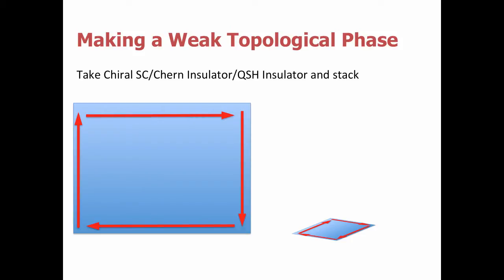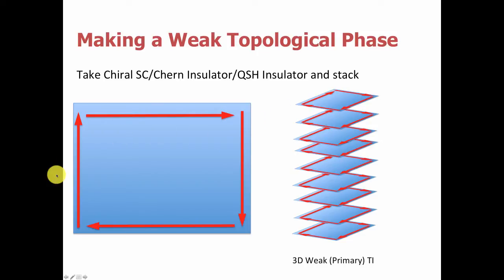We can play this game with any type of strong topological phase — examples we've studied include the chiral superconductor, the Chern insulator, and the quantum spin-Hall insulator. We can take a plane of these and stack them up. Here I've chosen a single plane of a Chern insulator and stacked it into three dimensions, creating a 3D primary topological insulator. This system will have edge states on the left and right edges, but not on the very top and bottom, again showing the anisotropy. This system is described by a vector weak index, and the vector tells us which direction these planes are stacked.